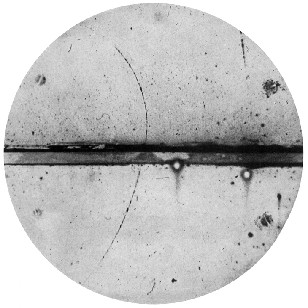Cloud chambers played a prominent role in experimental particle physics from the 1920s to the 1950s, until the advent of the bubble chamber. In particular, the discoveries of the positron in 1932 and the muon in 1936, both by Carl Anderson, awarded a Nobel Prize in Physics in 1936, used cloud chambers. The discovery of the kaon by George Rochester and Clifford Charles Butler in 1947 also was made using a cloud chamber as the detector. In each case, cosmic rays were the source of ionizing radiation.